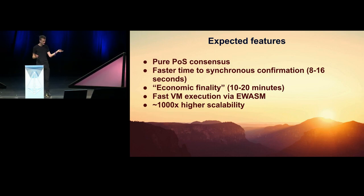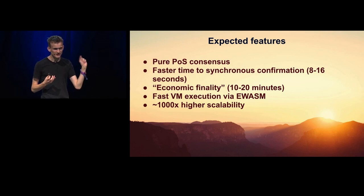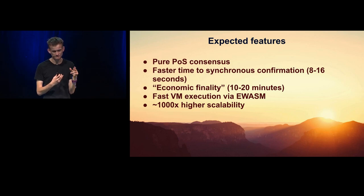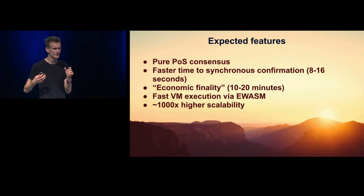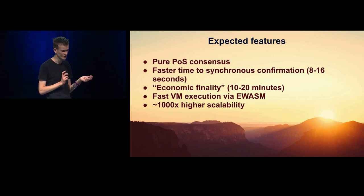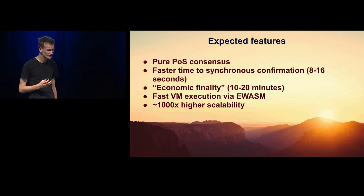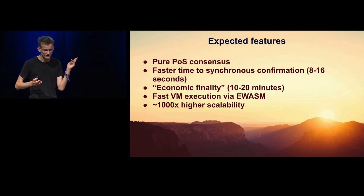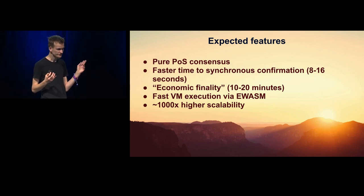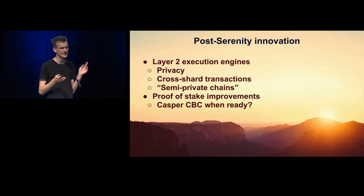Expected features: pure proof-of-stake, faster time to synchronous confirmation — about 8 to 16 seconds. Notice that because of how the fork choice rule and signing mechanism work in the beacon chain, one confirmation involves messages from hundreds of validators. From a probabilistic point of view, it's actually equivalent to hundreds of confirmations of the Ethereum proof-of-work chain. Under a synchronous model, you should be able to treat one block as being close to final. Economic finality and safety under asynchrony comes after 10 to 20 minutes. Fast virtual machine execution via eWASM, and hopefully a thousand times higher scalability.